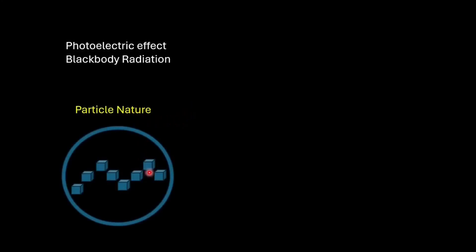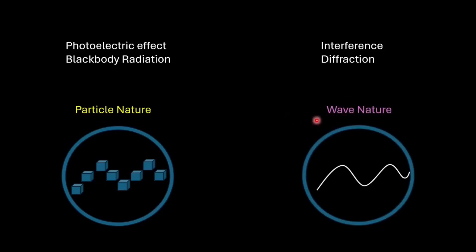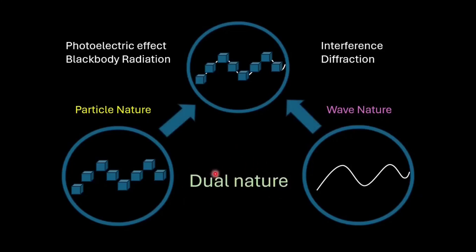In conclusion, we had two different sets of observations. On one hand, phenomena like black body radiation and photoelectric effect provide strong evidence for the particle nature of light, while interference and diffraction demonstrate its wave-like behavior. These findings led to the understanding that light or electromagnetic radiation has a dual nature. It exhibits both wave and particle characteristics.